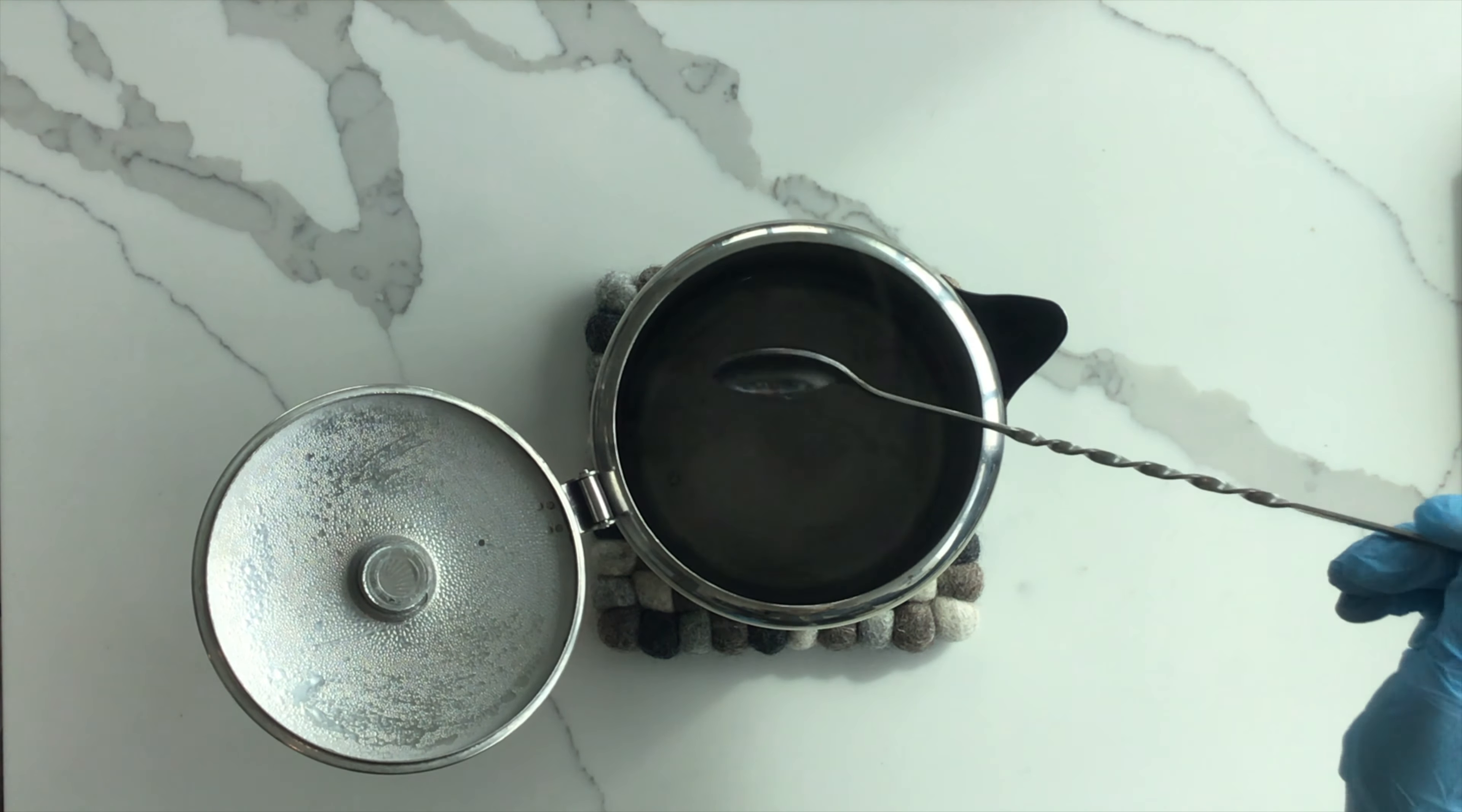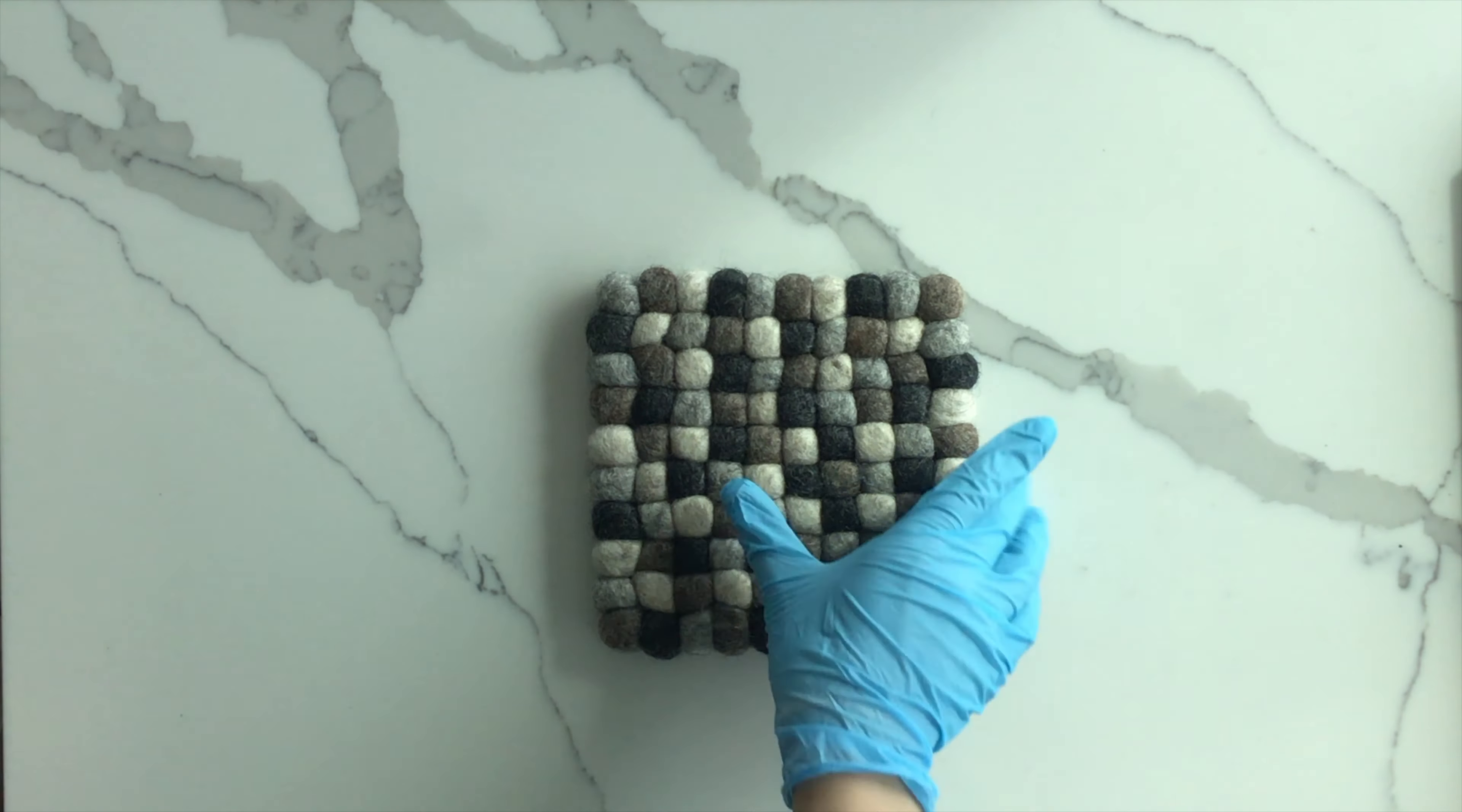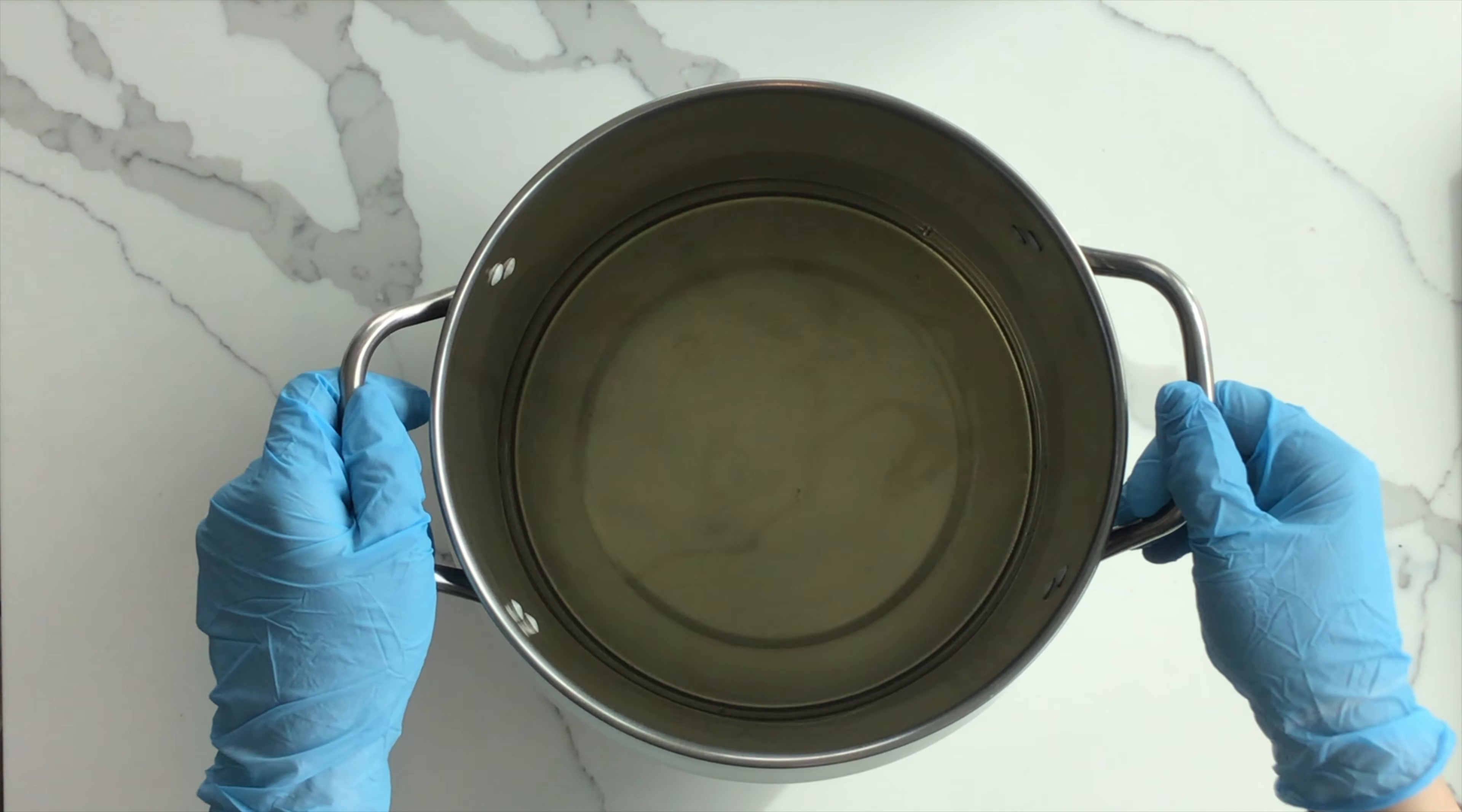Now measure the temperature of the lye solution, making sure to put your gloves back on if you've taken them off. The sides of the pitcher might still be hot, so be careful. Always wear gloves when handling lye. Both temperatures were too high. They were well over 120 degrees, so they are too hot to mix. You can allow these to cool naturally over time, which will take a few hours. You can also speed the process of cooling the oil and the lye solution by making an ice water bath.